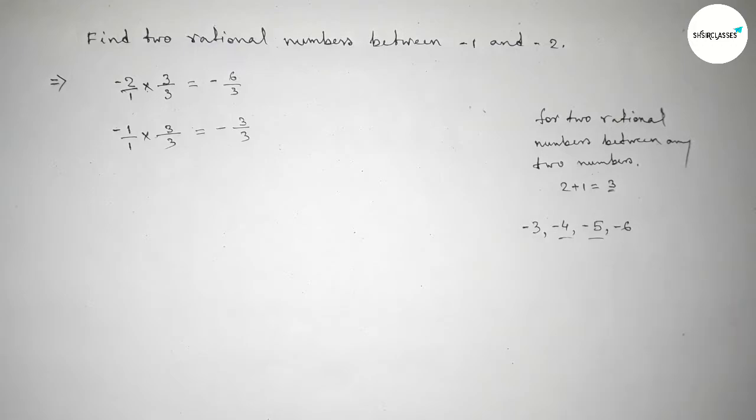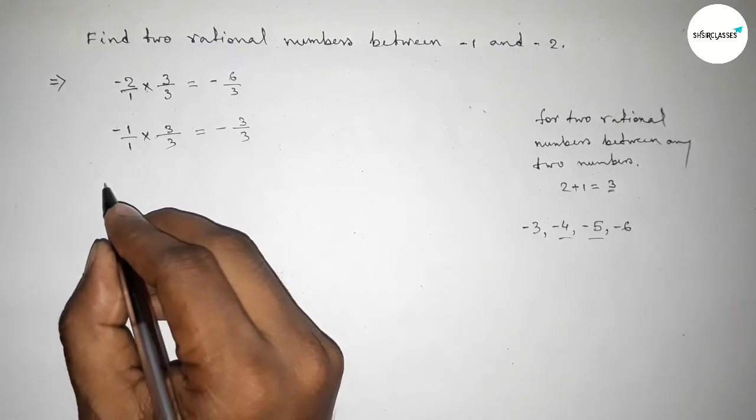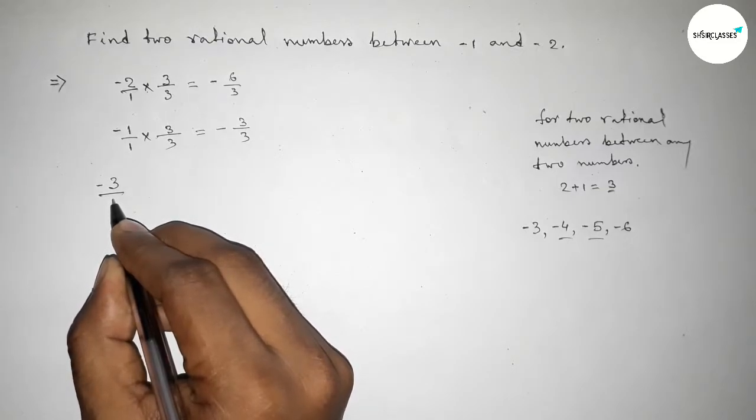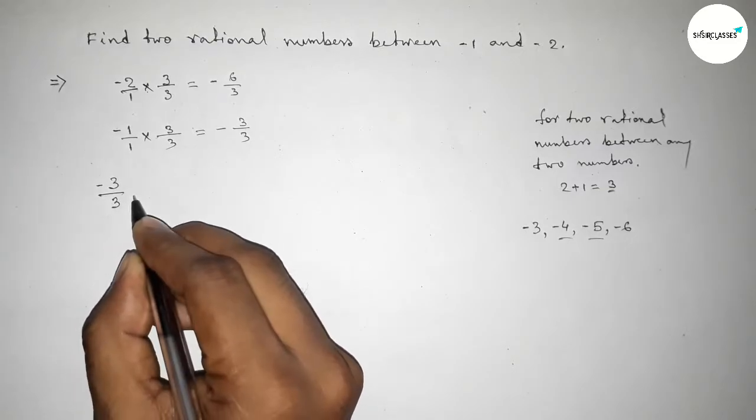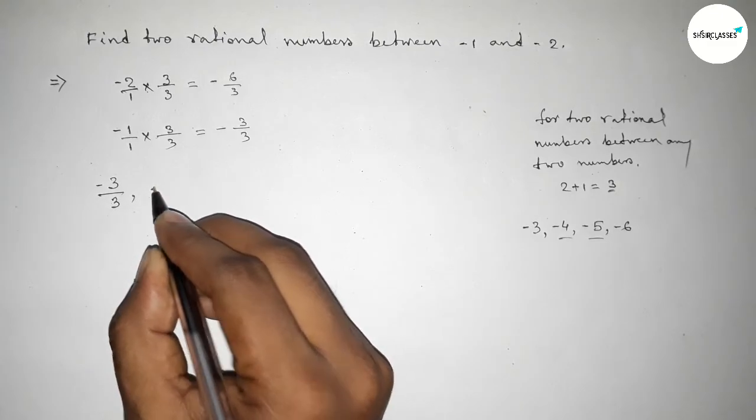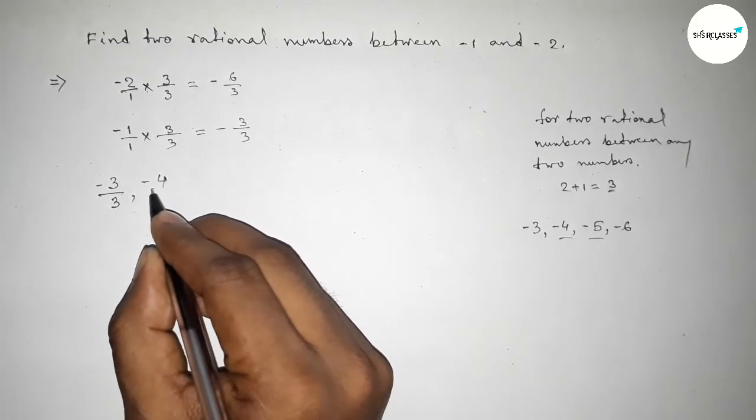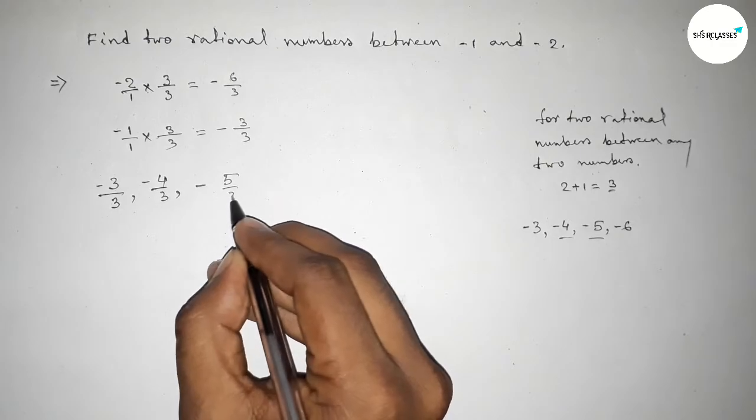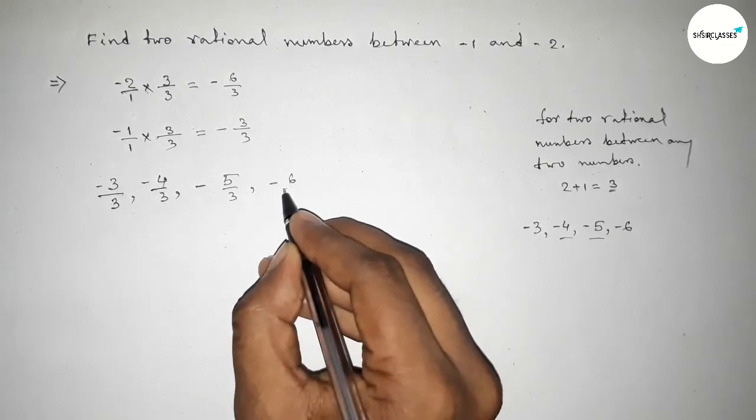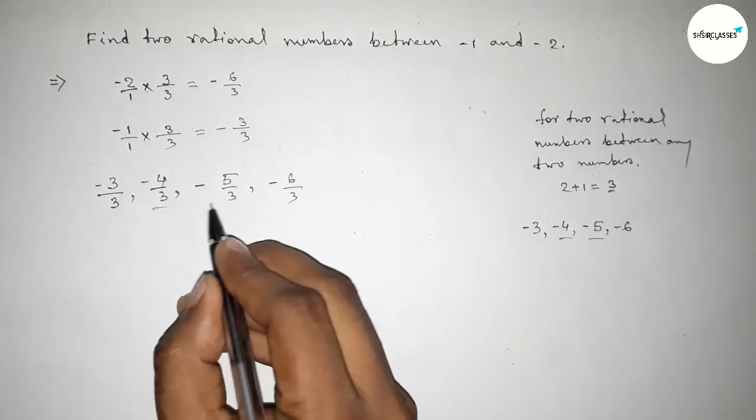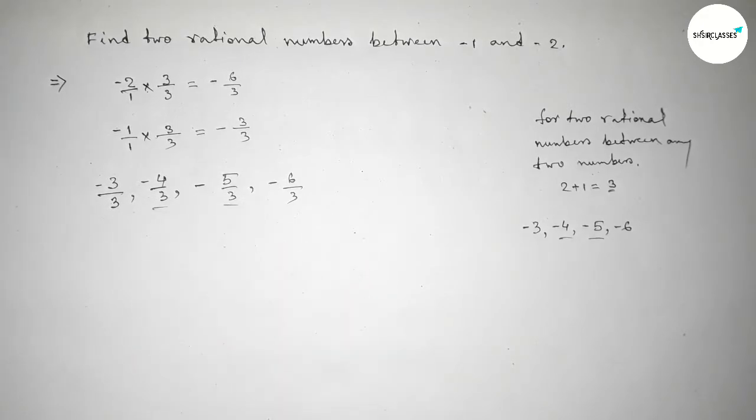By these natural numbers we can form rational numbers by this way. So first one minus 3 over 3, and second one minus 4 over 3, and minus 5 over 3, and last one minus 6 over 3. So among these, these are the two required...